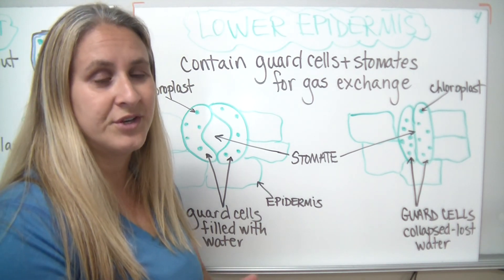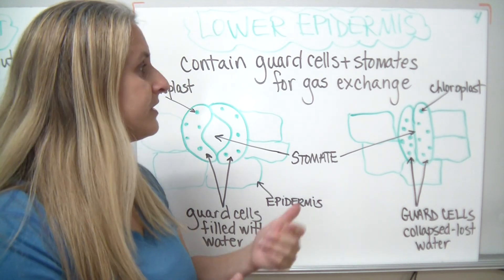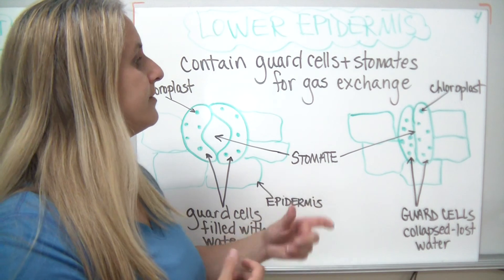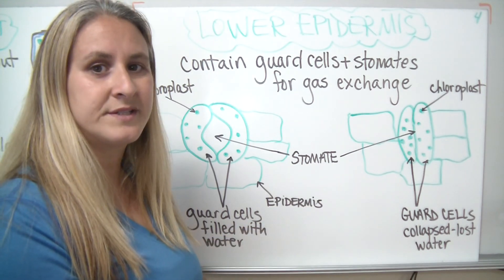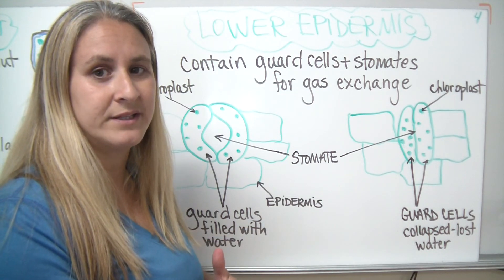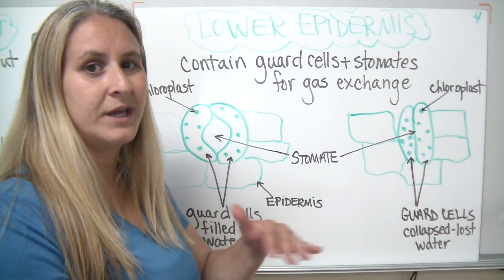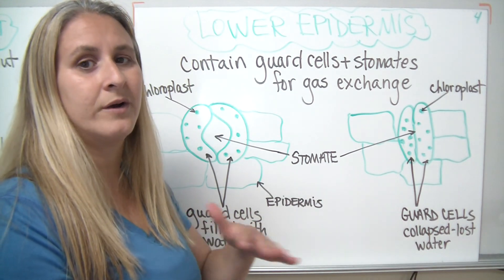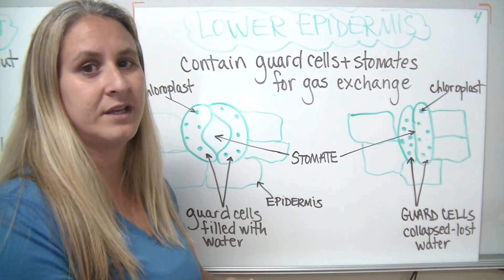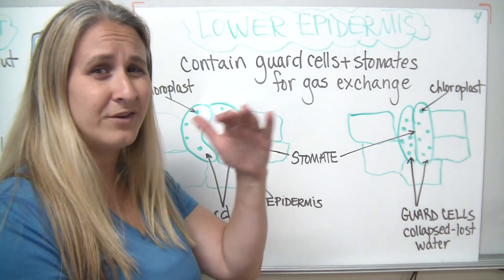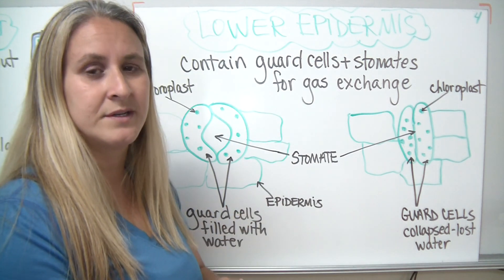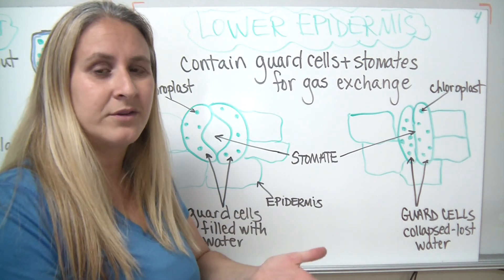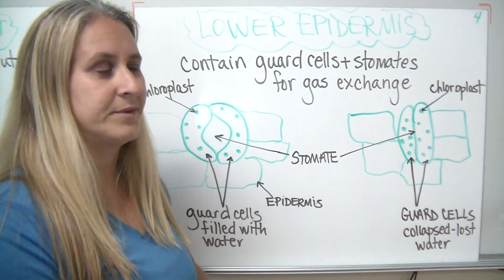The other question I want you to think about is why is it that the guard cells and stomates are located on the lower epidermis of the leaf? Why aren't they located on the upper epidermis? Why do you think they're on the lower epidermis?